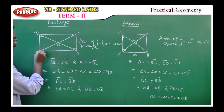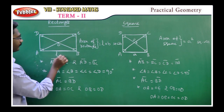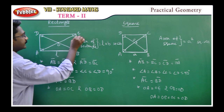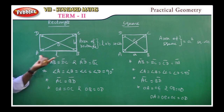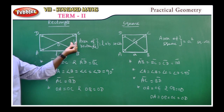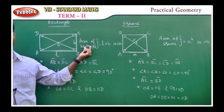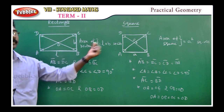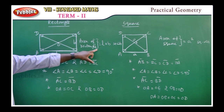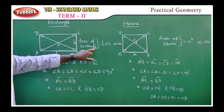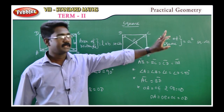L represents the length, and B represents the breadth — length and breadth. So the area of a rectangle is L multiplied by B. That is the formula for rectangle area. Area of square is a squared.